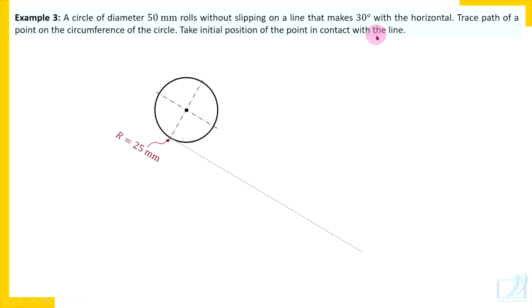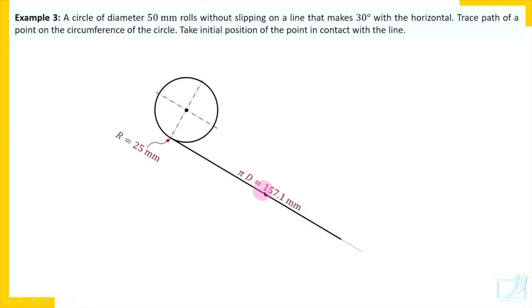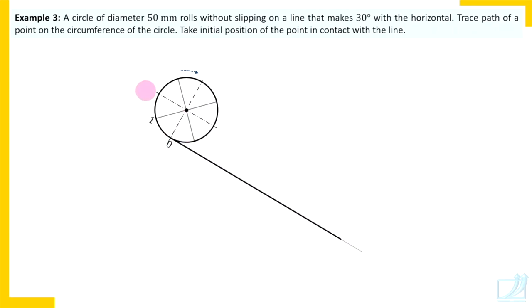The guiding line makes an angle of 30 degrees, and that is why we have drawn the center line first at an angle of 30 degrees. So once you get the center, you complete the circle. The circle has diameter 50 millimeters, so take radius 25 millimeters in compass. Now draw the guiding line at an angle of 30 degrees. Set a roller with this line and roll the roller to draw a line at 30 degrees. Visualize that this circle rolls on this inclined line. Along this inclined line, measure distance pi*d. Check the direction of rotation. Initial position is in contact with the guiding line, so in clockwise order, label all those points.